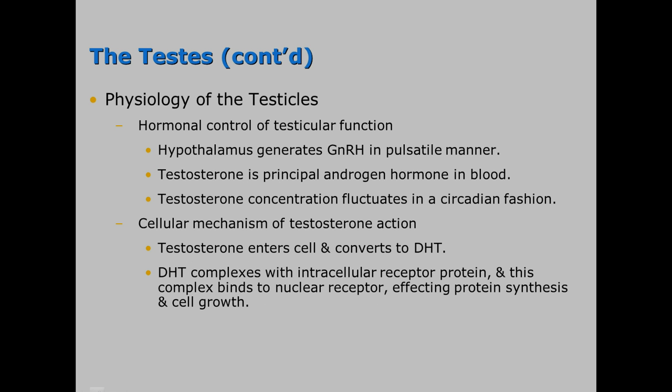There is hormonal control of testicular function. The hypothalamus secretes gonadotropin releasing hormone in a pulsatile manner, causing the release of testosterone, the principal androgen hormone in the blood and the most biologically active. Once testosterone is in the blood, it enters a cell and converts to dihydrotestosterone. This dihydrotestosterone complexes with an intracellular receptor protein, and that complex then binds to a nuclear receptor, affecting protein synthesis and cell growth.